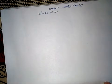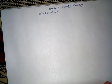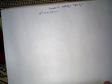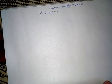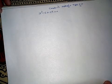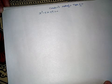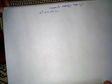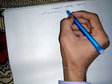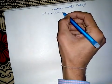Welcome friends. Now I am going to discuss Cardano's method, Type 1. Our past question here: x cubed minus 6x plus 9 is equal to 0. In Type 1 questions, the x-squared term is missing — that is, the second term from the beginning is missing. So we can easily solve it. Let us consider x cubed minus 6x plus 9 is equal to 0 as equation one.